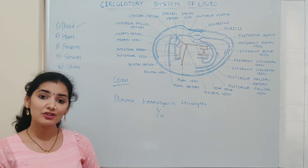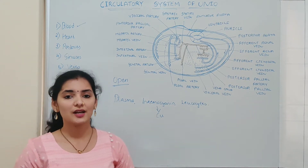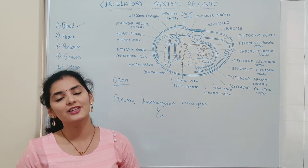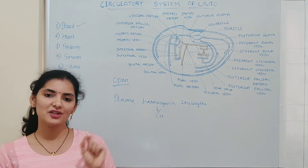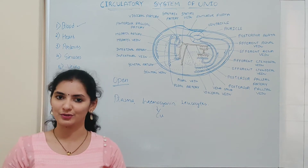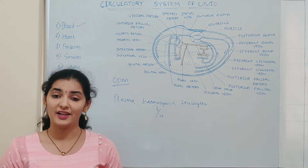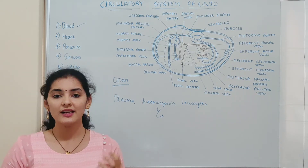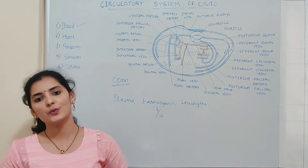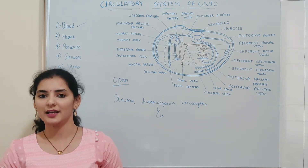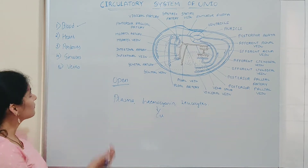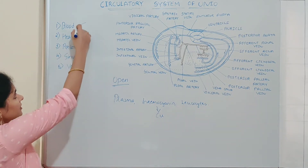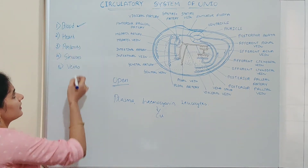The main function of blood is to transport nutrients and oxygen to each and every cell of the body, and to collect nitrogenous waste and carbon dioxide from the cells.